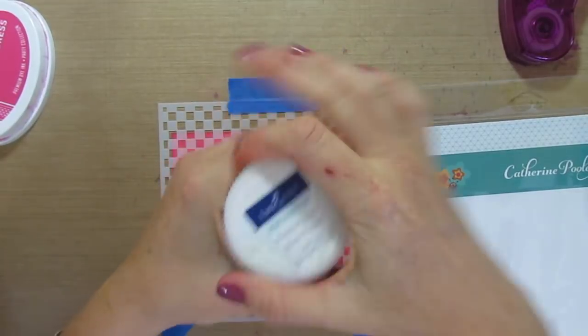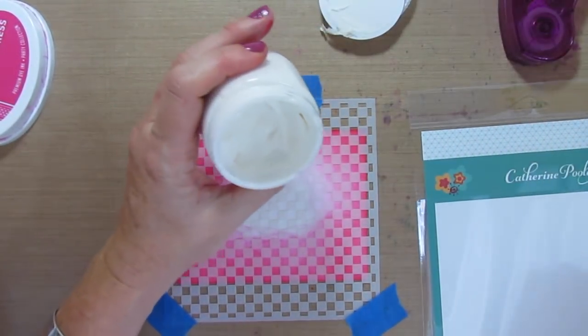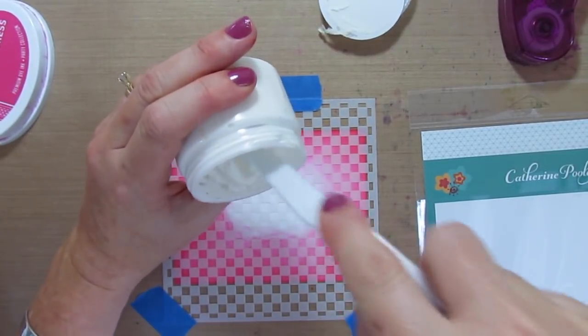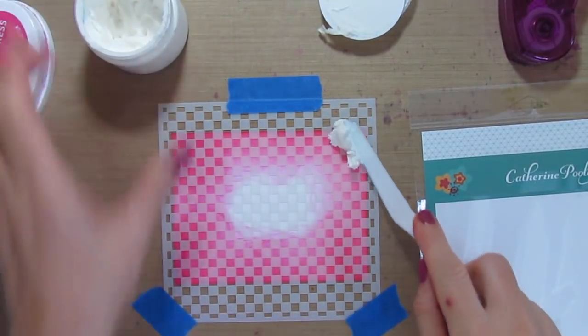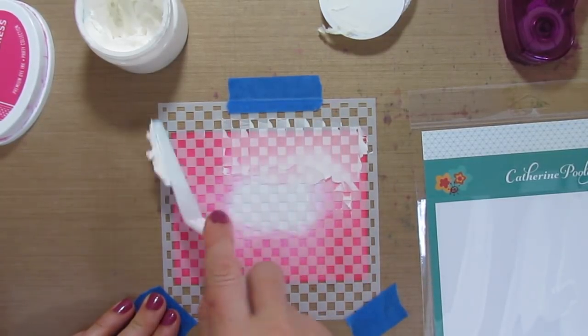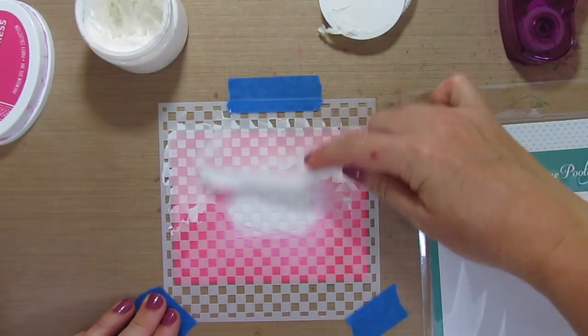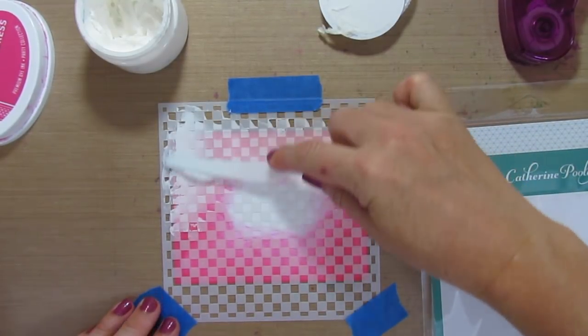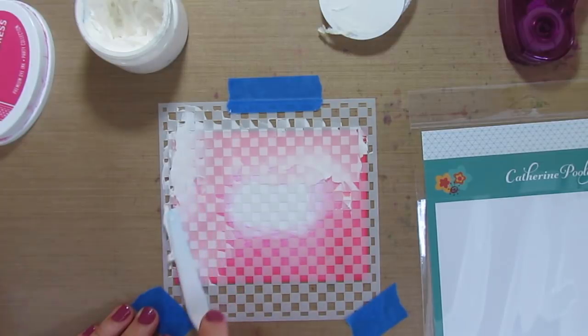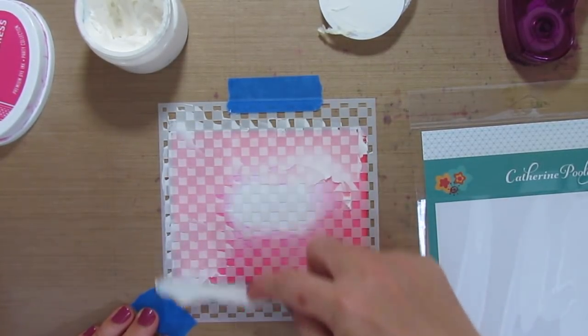I have whipped spackle and a palette knife. I'm going to scoop some out. If you haven't ever used whipped spackle before, it's a really fun medium to use with stencils. You can also mix it with ink and have colored spackle, which is really cool. It is, if you're familiar with embossing paste, like an embossing paste. The consistency of the whipped spackle is more like frosting.